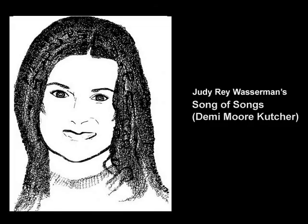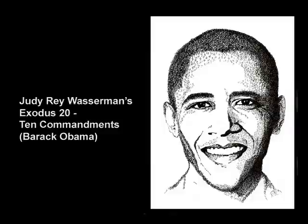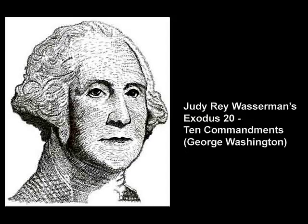I use Song of Songs for the basic essence portrait of Ashton Kutcher and his wife Demi Moore — this unites them as a pair. The Ten Commandments, also known as Exodus 20, are the basis of the law of the United States and much of the Western world, so I use it for the basic essence portraits of our presidents, including Barack Obama, George Washington, and Abraham Lincoln.